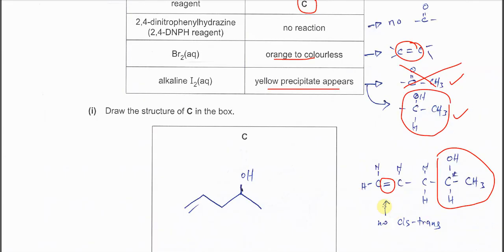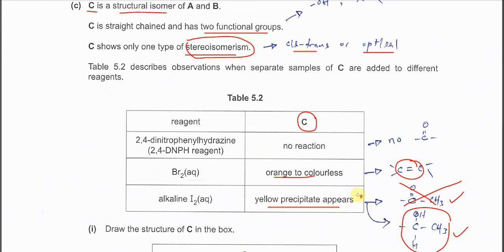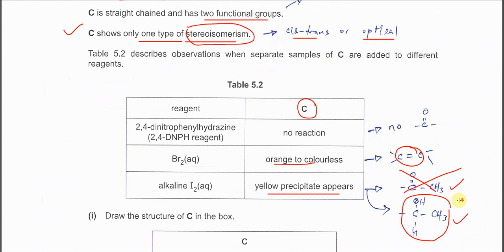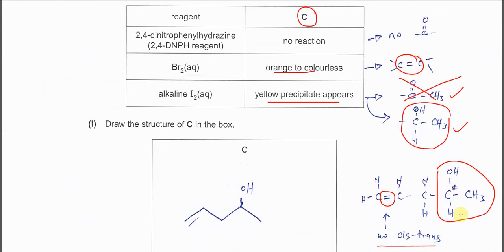Okay, must be between these two carbons. Because when the double bond is between these two carbons, this will not form cis-trans. Okay, because this carbon now has two hydrogens. So no cis-trans available for this structure, which meets the requirements for this. Okay, only shows one type. Already has one type which is optical. So it cannot have another one, cis-trans. That's why the double bond just can be here, cannot put here. Or it cannot put here. So these two places cannot put. We just put the double bond here.